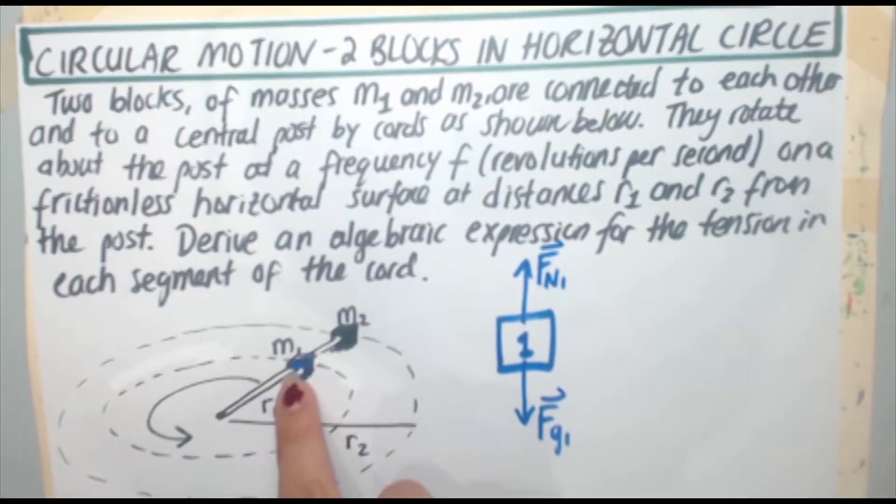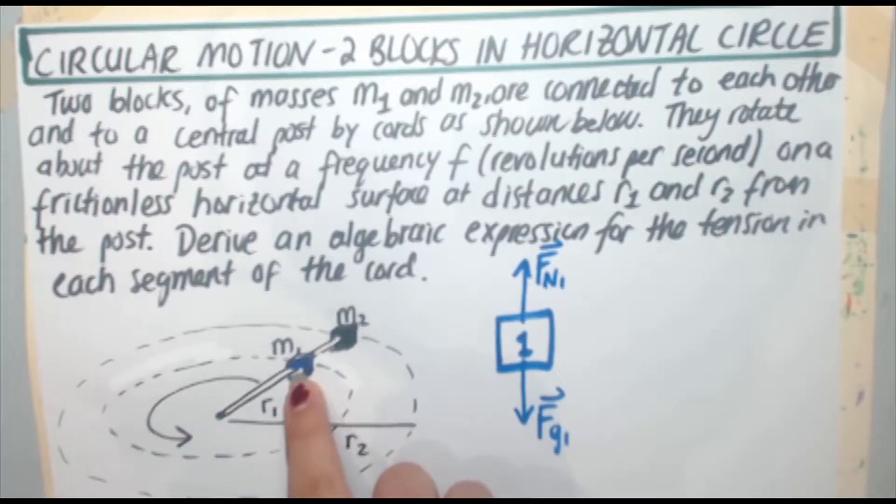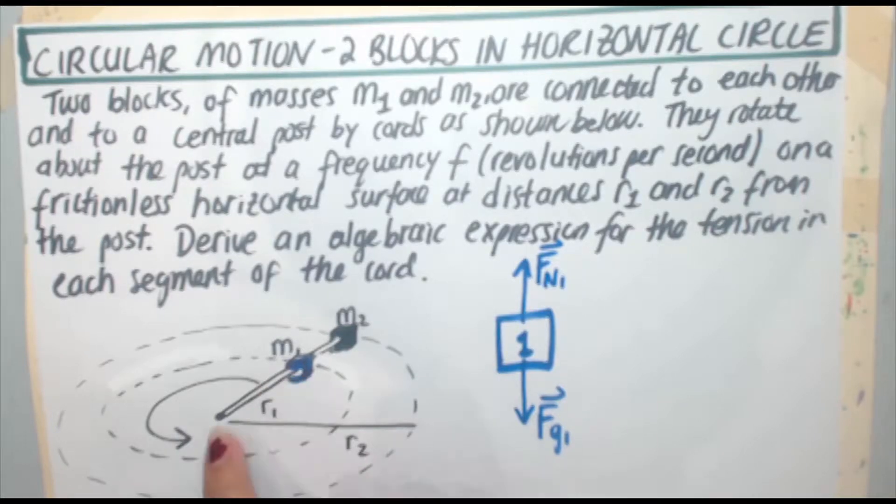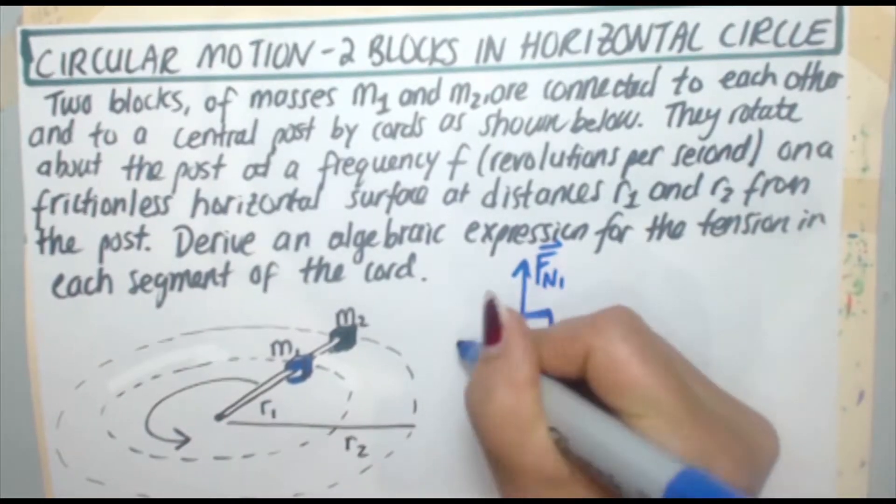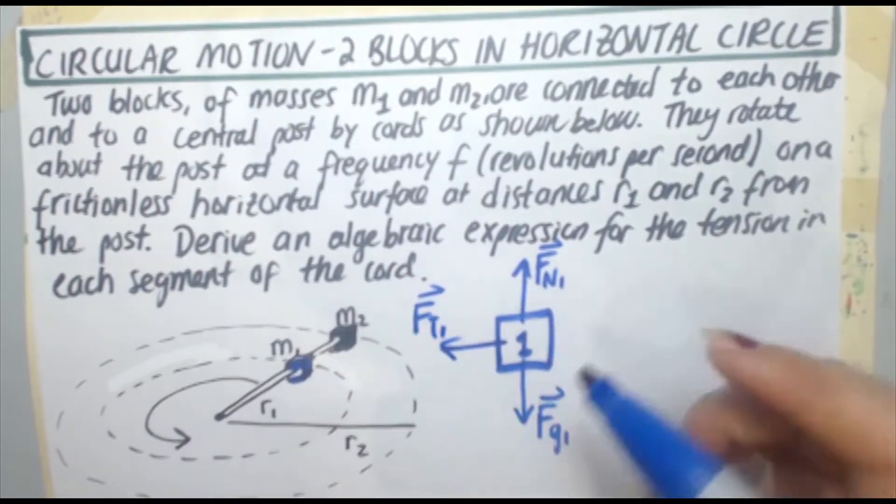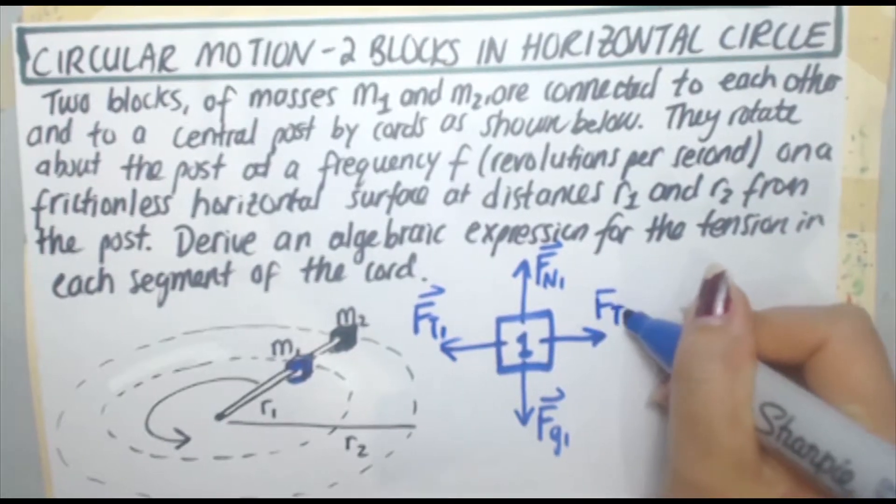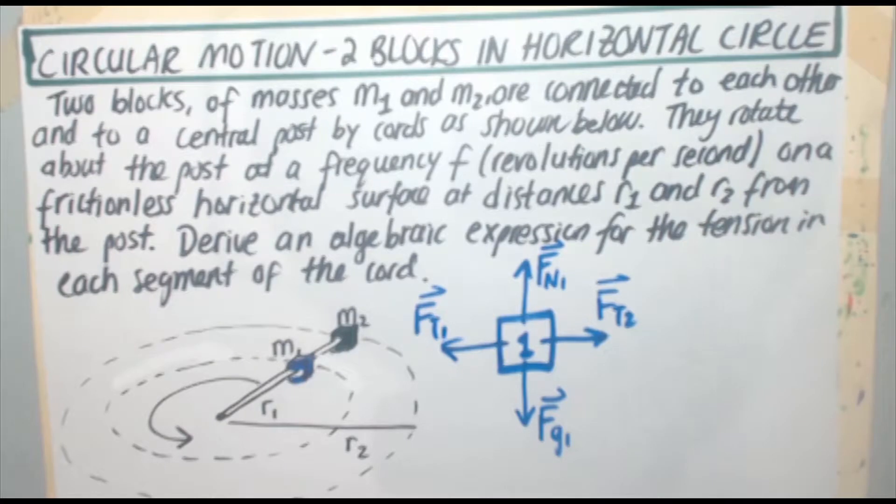Now looking at one, you've got a force of tension to the left and a force of tension to the right. The one going to the left towards the center of the circular motion, we'll call that Ft1. And the one going to the right, we're going to call that Ft2. You want to make sure you don't call them the same name because they're two different strings, they're going to have two different tensions.